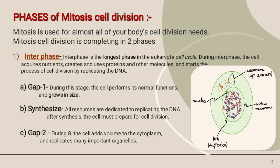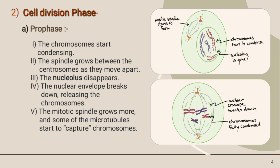Gap 2: during G2, the cell adds volume and other organelles replicate. Then the cell division phase begins.